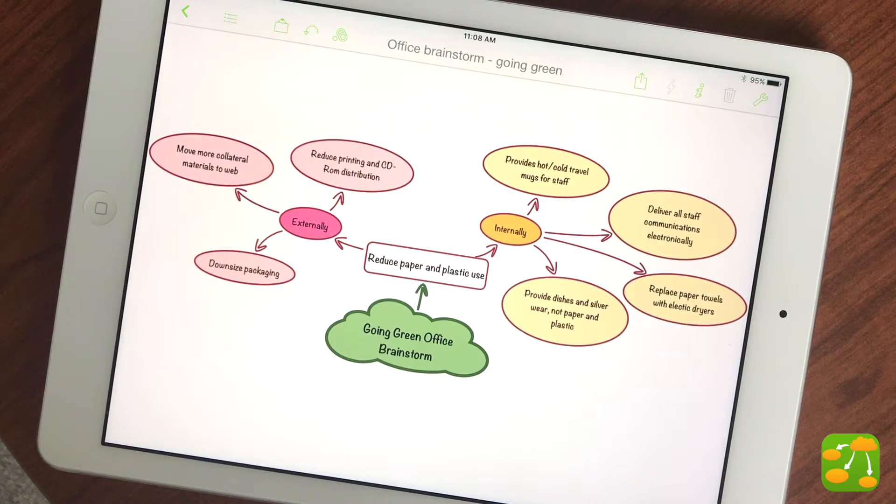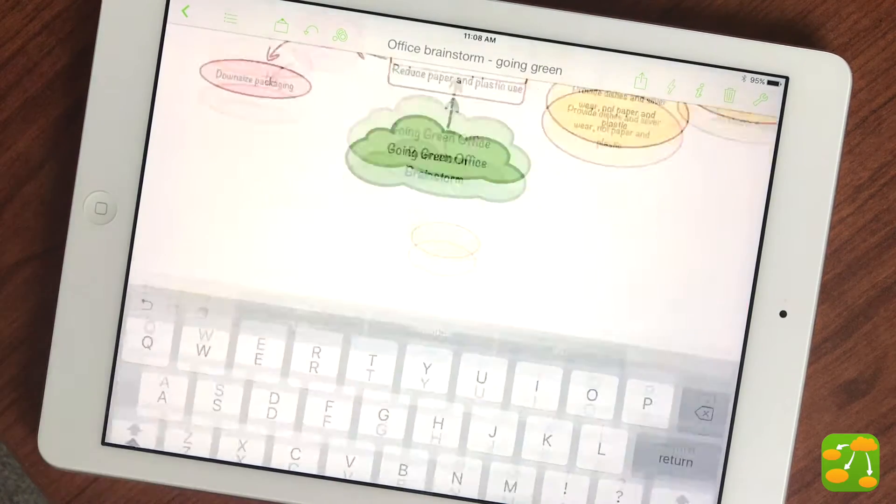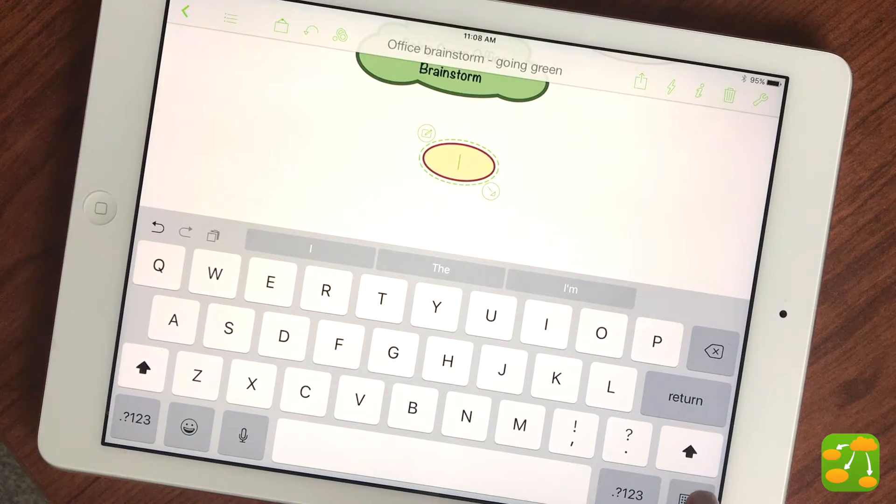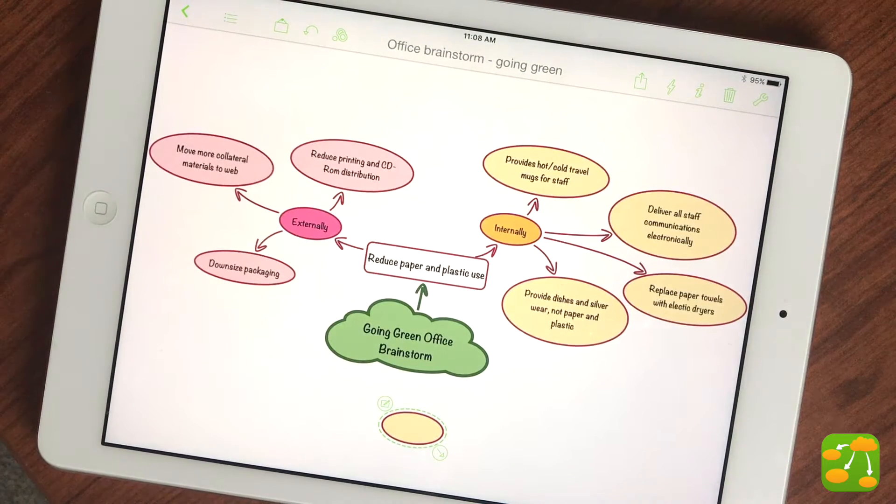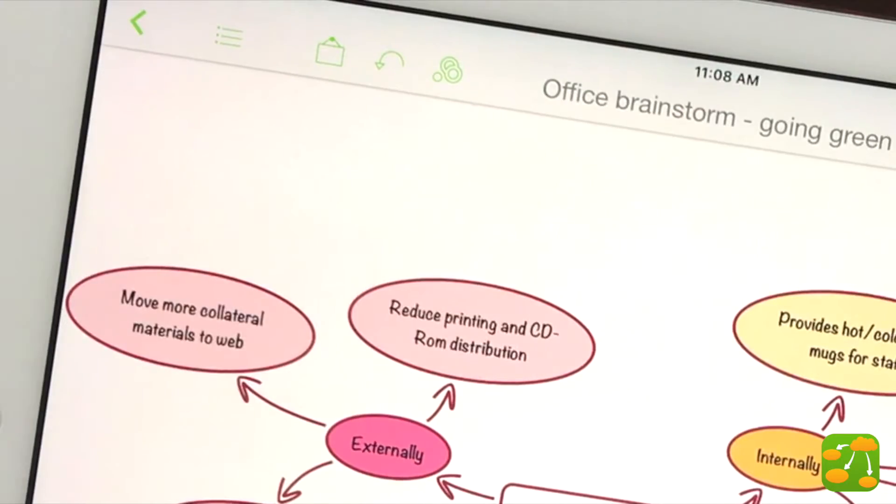There are a number of ways to create a new idea symbol, but the simplest is to double tap a blank space on your screen. Another way to create a new symbol is to drag it from the Symbol Library.